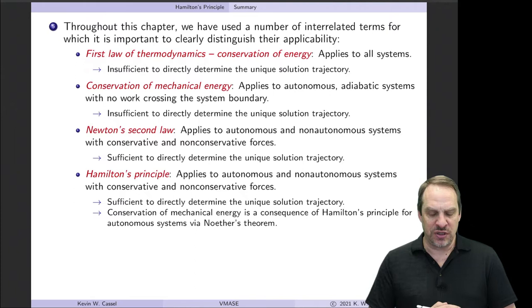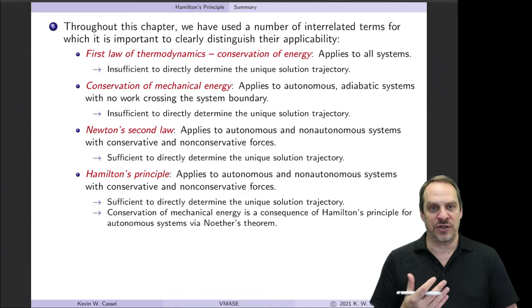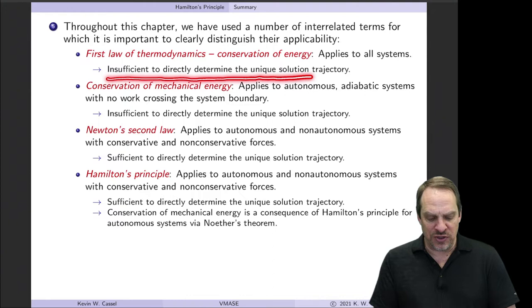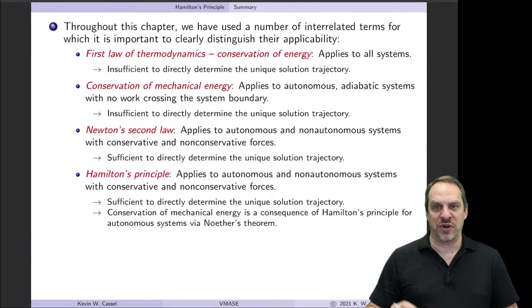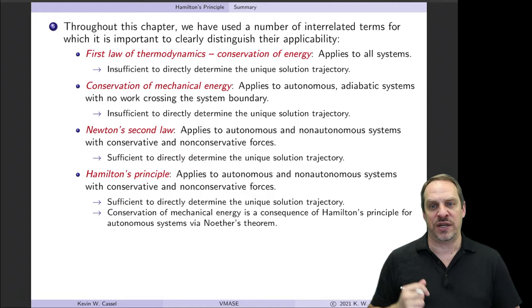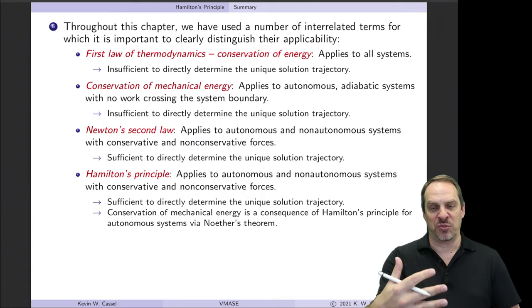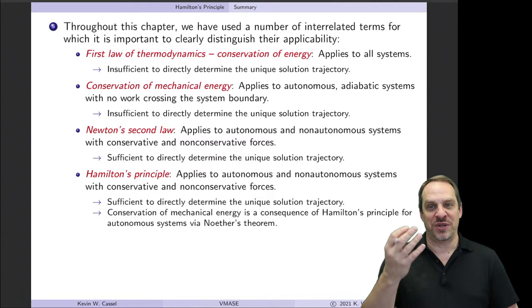The first law of thermodynamics — conservation of energy — is a very fundamental principle applied across many fields. However, it turns out it's actually insufficient to directly determine the unique solution trajectory of any given system. For example, if I raise an object to a certain height, it has potential energy. If I drop it, I can determine the kinetic energy when it hits the floor. But conservation of energy alone does not tell me the direction of a process — it doesn't determine that a ball will fall to the ground.